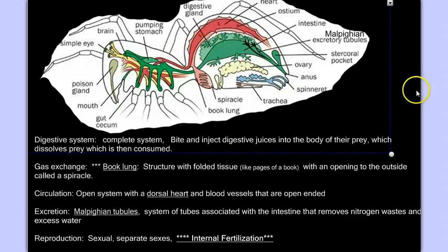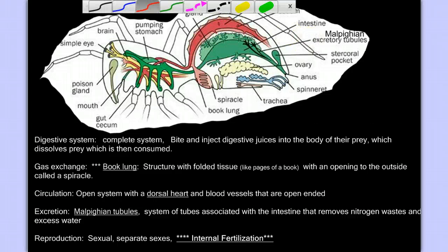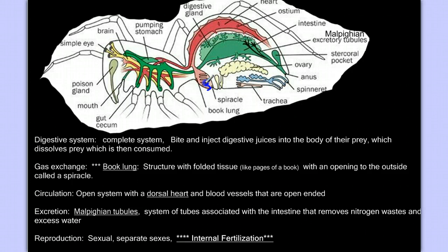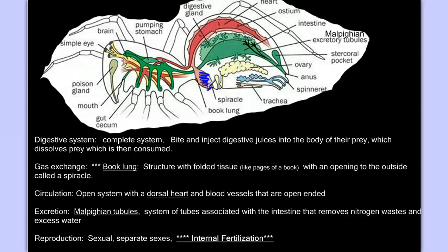In terms of gas exchange — in the crustacea, the aquatic organisms, we have gills — but spiders are terrestrial. So they need a structure that can exchange gases on land, and they have what's called a book lung. It's called a book lung because it's folded, with lots of folds like pages of a book. More folds give us more surface area, and more surface area gives us a better gas exchange surface, allowing more diffusion across a large surface in one structure.